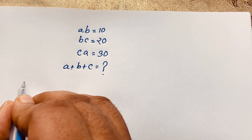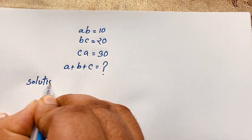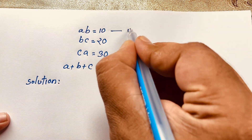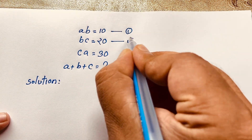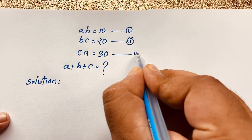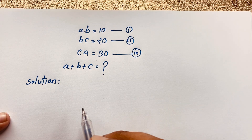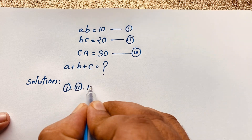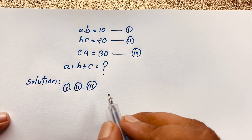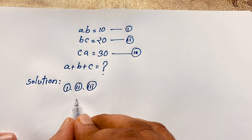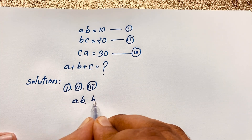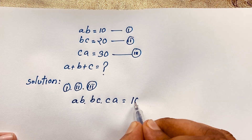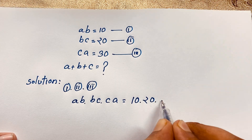So our maths solution — here this is our first equation, this is our second equation, and this is our third equation. First of all, I multiply our first equation, second equation, and third equation. It will be AB times BC times CA is equal to 10 times 20 times 30.